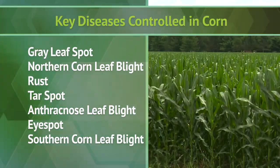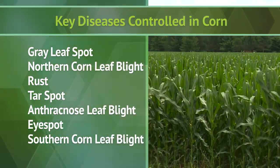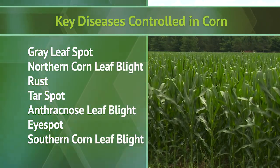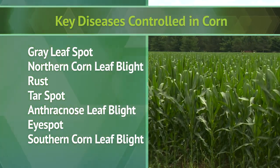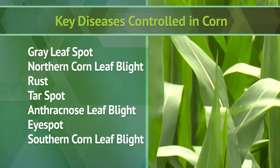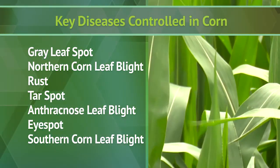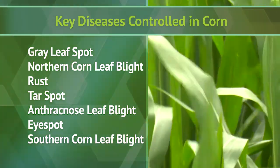Diseases Dallaro can help control in corn include gray leaf spot, northern corn leaf blight, rust, tar spot, anthracnose leaf blight, eye spot, and southern corn leaf blight.